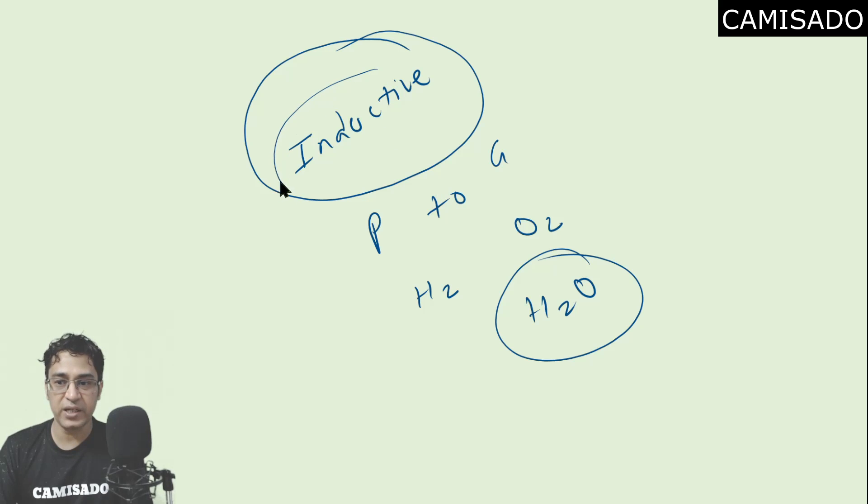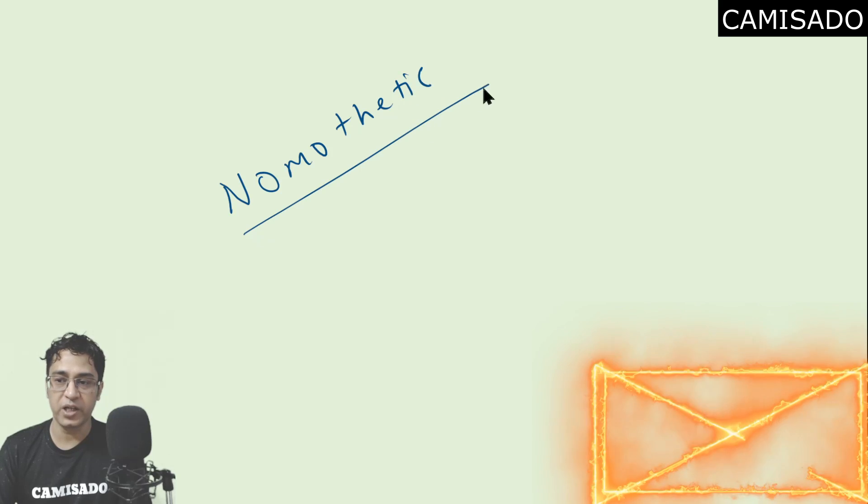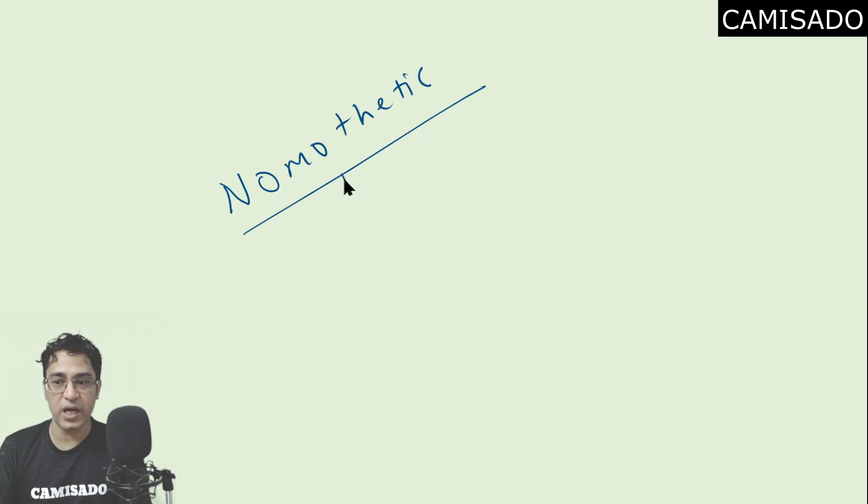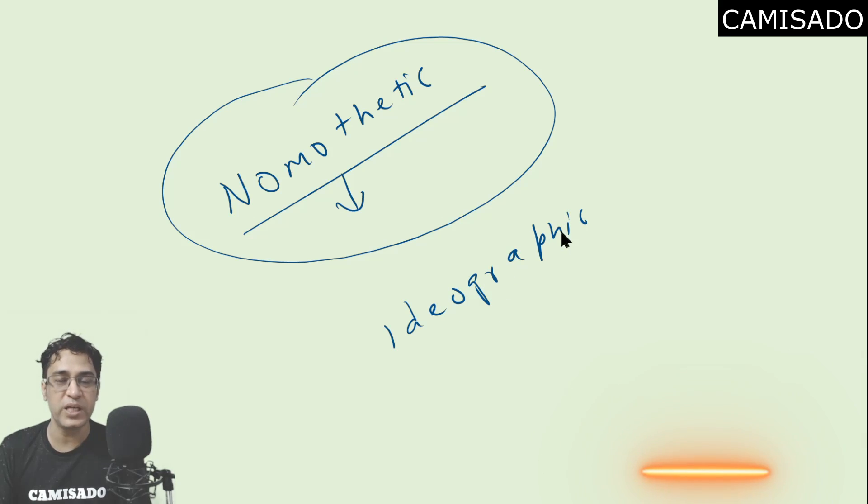That is why an inductive approach is not a very good approach when we take into context countries or people. We can also say in the introduction that this is a nomothetic approach. A nomothetic approach is again a scientific approach and the opposite of nomothetic is ideographic. Ideographic is that approach in which we talk about uniqueness of phenomena. For example every human being is unique, every country is unique, it has its own socio-economic conditions. So an ideographic approach is better when we talk about human beings or countries.